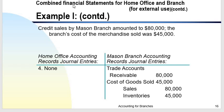These next transactions are external — meaning transactions of the branch with third parties. Credit sales by Mason Branch amounted to $80,000, and the cost of merchandise sold was $45,000. Since we are using a perpetual inventory system, there are two combined entries: debit Trade Accounts Receivable, credit Sales for $80,000; and debit Cost of Goods Sold $45,000, credit Inventory.